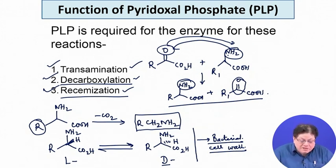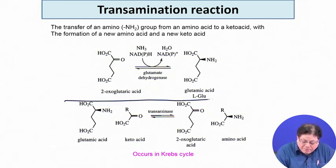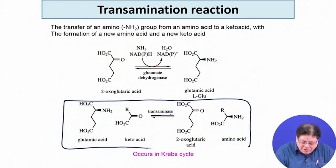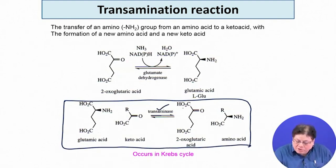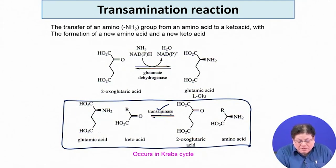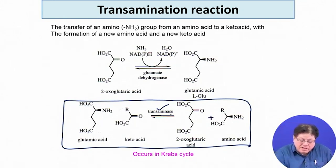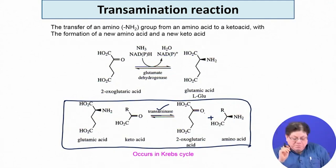Let us discuss the mechanism of these different reactions. The transamination reaction is catalyzed by a transaminase — and depending on the amino acid, you can name it specifically. For example, glutamate transaminase takes glutamic acid and another alpha-keto acid: the glutamic acid goes to the keto acid (2-oxoglutaric acid, also known as alpha-ketoglutaric acid or alpha-KG), and in turn the starting keto acid goes to an amino acid.